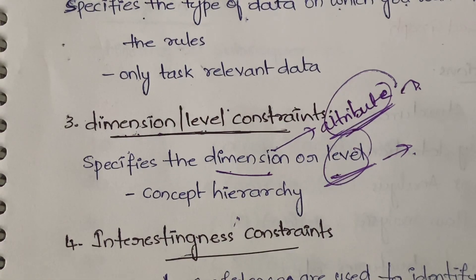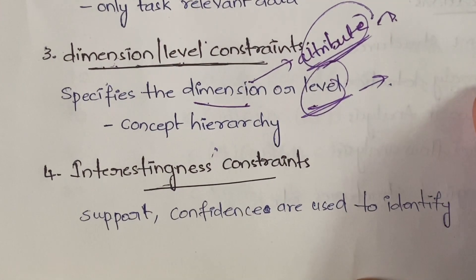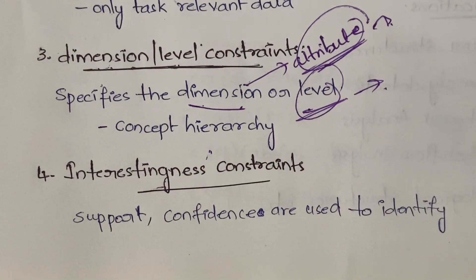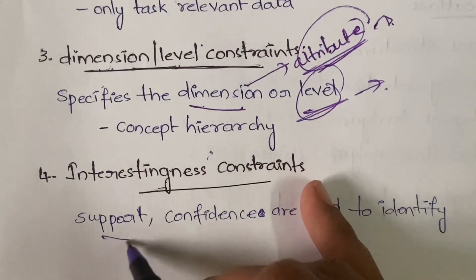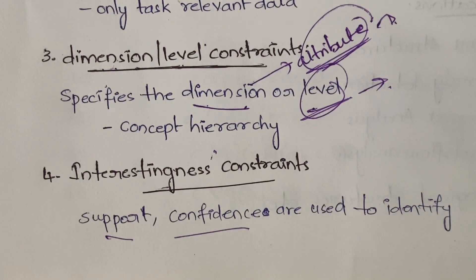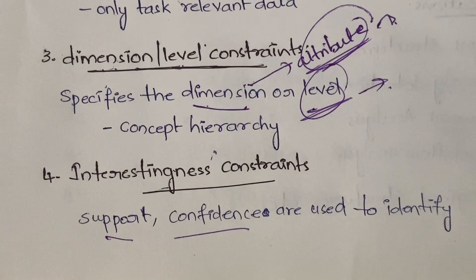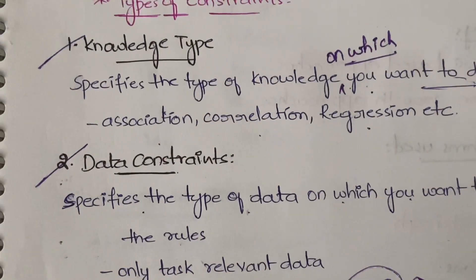Here we use the concept of concept hierarchy. Concept hierarchy is about at which level of hierarchy and which attribute you have to use. Next, the fourth one is interestingness constraints. Interestingness constraints specify how interesting a particular piece of data is — how much interesting the data you have picked up is. You determine interestingness using support percentages and confidence percentages to get the interestingness of the pattern or data.